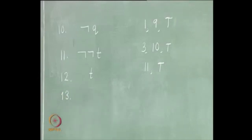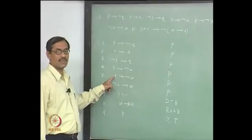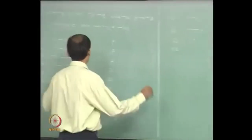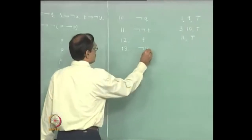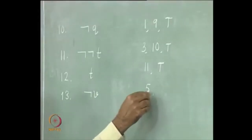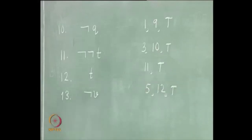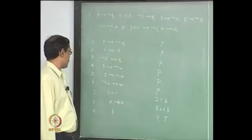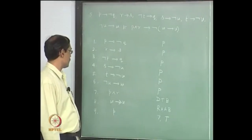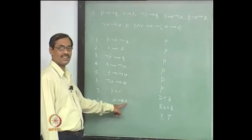Then what is our plan? Here there is modus ponens we can use. So that will give us not-v from line 5, line 12, modus ponens. Next, how do you use not-v? Well, you can use here. Again, modus ponens.